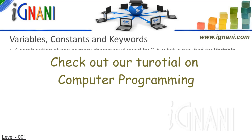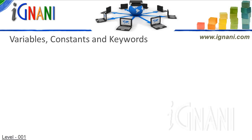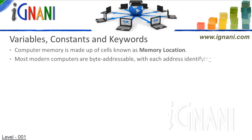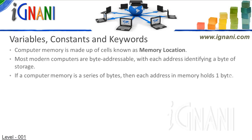It's better to know about programming first before starting with C programming, so I would suggest you check out our videos on computer programming. Computer memory is made up of cells, also known as memory locations. A set of 8 bits is known as a byte. Most modern computers are byte addressable, with each address identifying a byte of storage. If you think of computer memory as a series of bytes, each address in memory holds 1 byte.